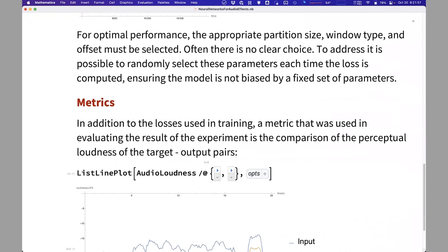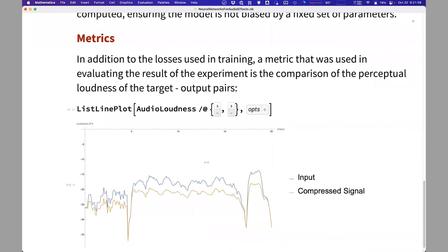An additional method that is used in evaluation, not in training, is the comparison of perceptual loudness. Because again, we are evaluating a dynamic range compression operation. So this is kind of the metric that people are accustomed to see.